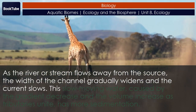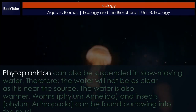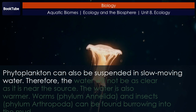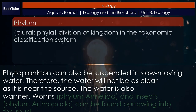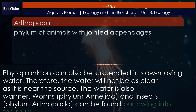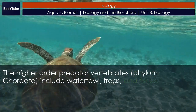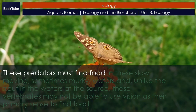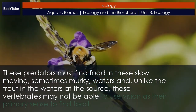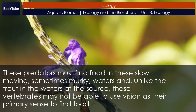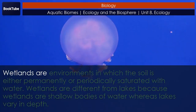As the river or stream flows away from the source, the width of the channel gradually widens and the current slows. This slow-moving water, caused by the decrease in gradient and increase in volume as tributaries unite, has more sedimentation; phytoplankton can also be suspended in slow-moving water, so the water will not be as clear as near the source. The water is also warmer. Worms and insects can be found burrowing into the mud, while higher-order predator vertebrates include waterfowl, frogs, and fishes. Unlike trout near the source, these vertebrates may not be able to use vision as their primary sense to find food and are more likely to use taste or chemical cues to find prey.